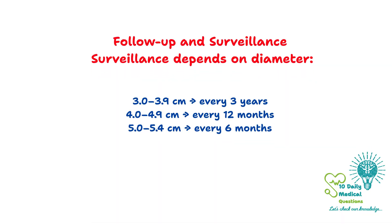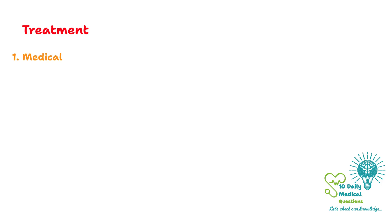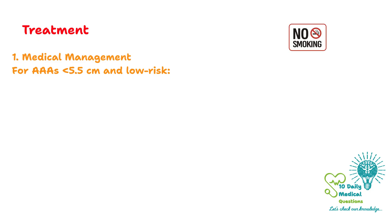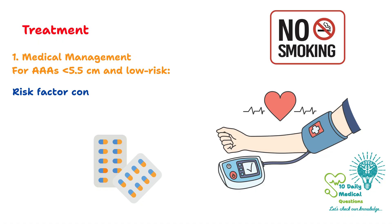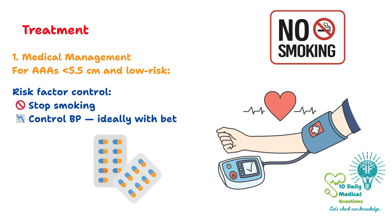Management depends primarily on aneurysm size and symptomatology. For small aneurysms — generally under 5.5 cm in men and under 5 cm in women — conservative management is appropriate. This includes strict control of cardiovascular risk factors, smoking cessation, optimized blood pressure with beta-blockers, statin therapy, and lifestyle modifications.